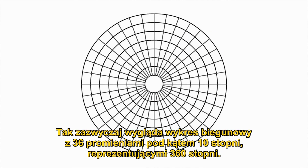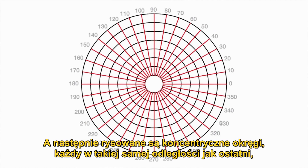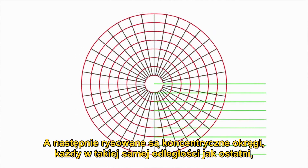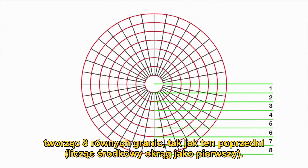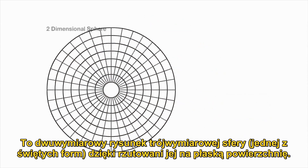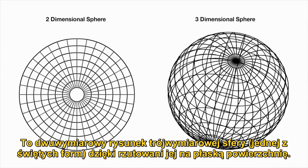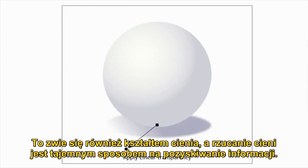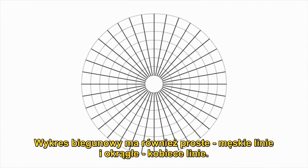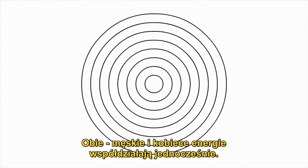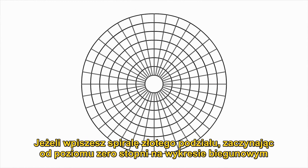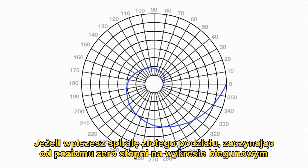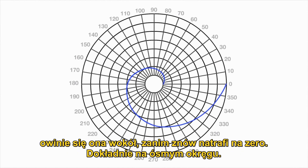This is how a polar graph usually looks, with 36 radial lines in 10-degree increments representing the 360 degrees. Concentric circles are drawn, each with the same distance away as the last, creating eight equal demarcations, counting the inside circle as one. Think about what this represents — it's a two-dimensional drawing of a three-dimensional sphere, one of the sacred forms, by projecting it onto a flat surface. This is also called a shadow form, and casting shadows is a sacred way to obtain information. A polar graph has both straight male lines and circular female lines — both male and female energies interacting at once.